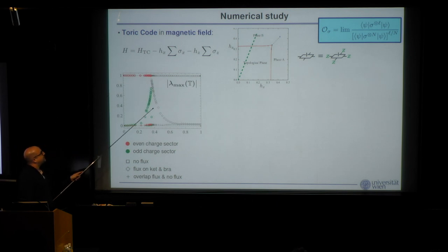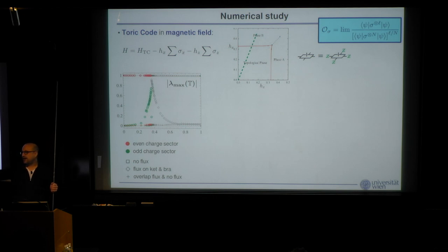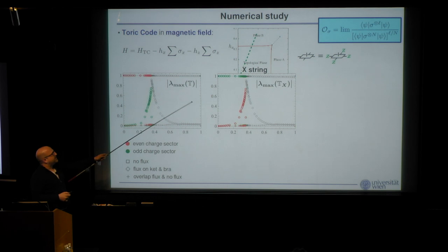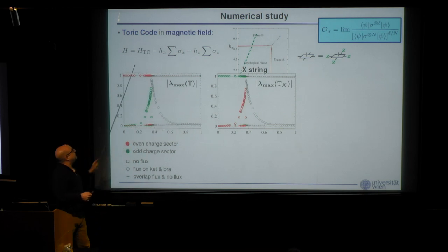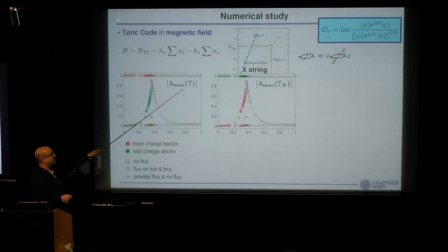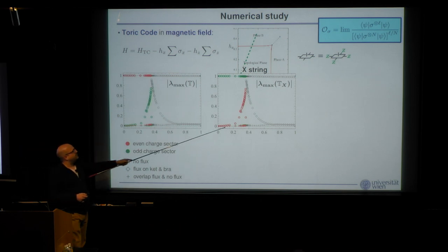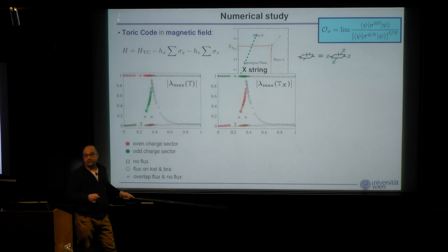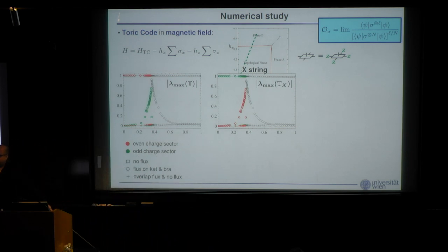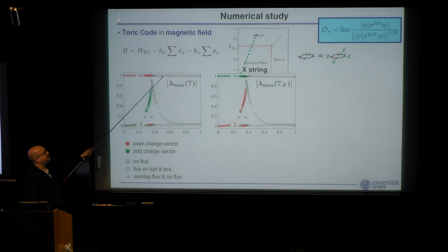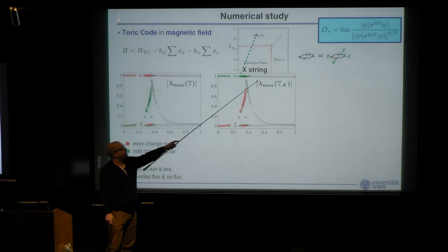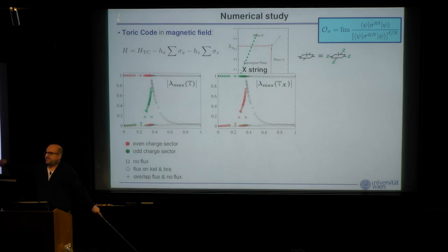At the phase transition, the charge condenses and the Z2 symmetry label structure breaks down, so the lines become gray and different flux sectors appear. For the transfer matrix with an X string operator, the sectors are swapped — red leading here, green leading there — and only at the phase transition does this close, confirming the order parameter is zero all the way to the phase transition. After the transition, both sides show the same flux-free sector as leading, giving a non-zero value consistent with the trivial phase result.